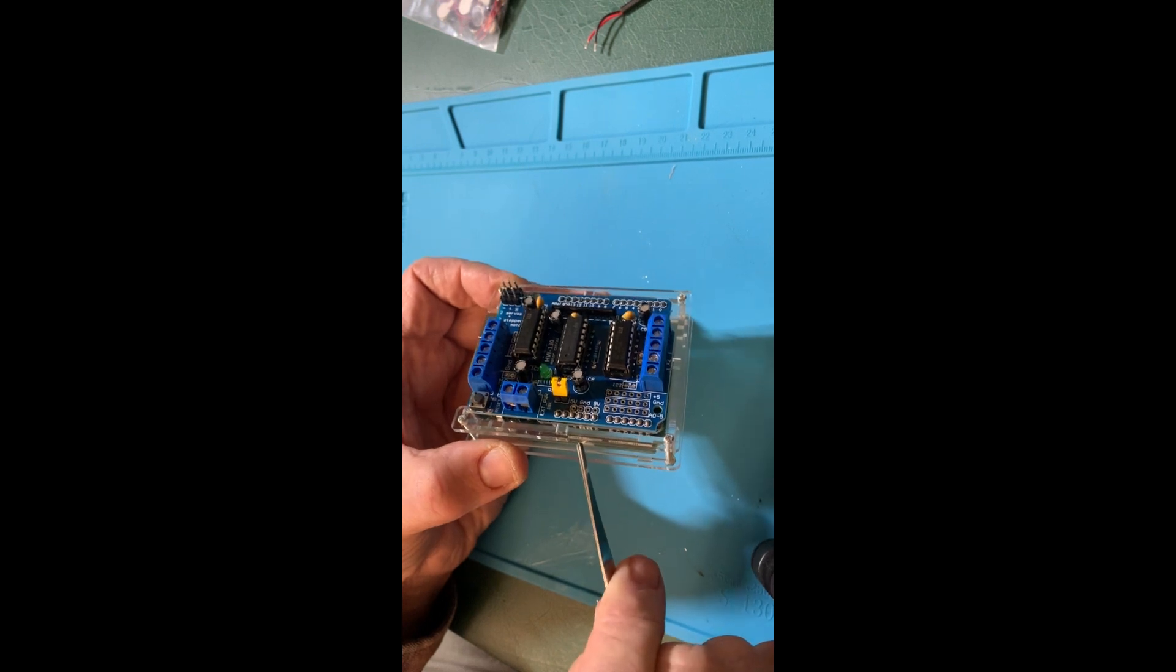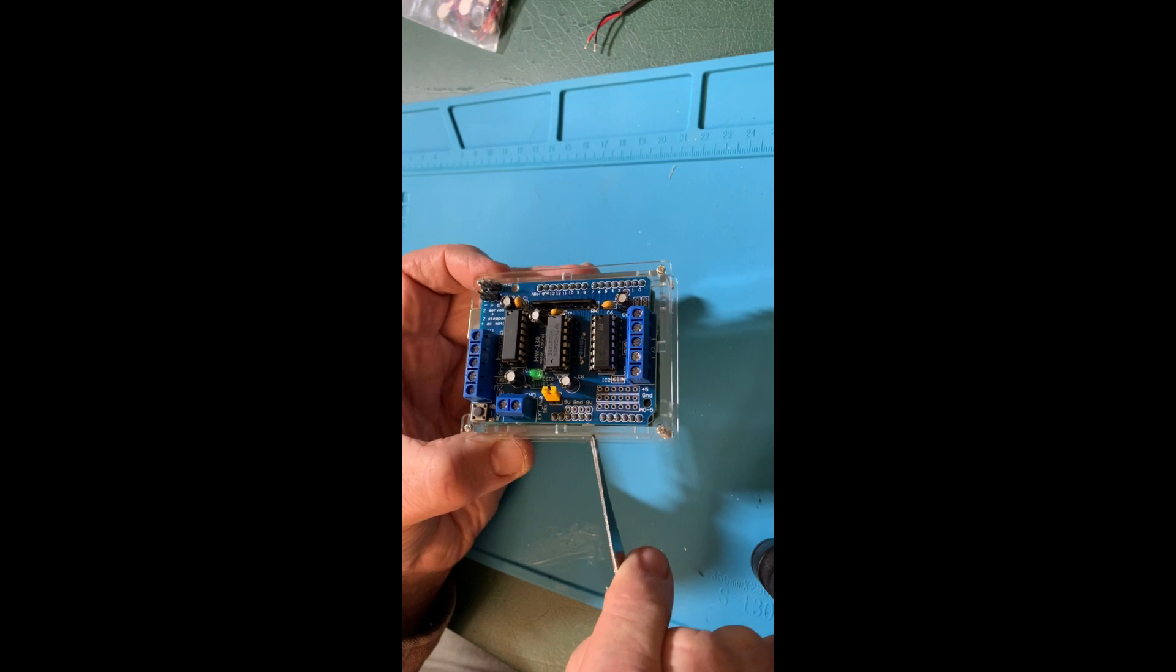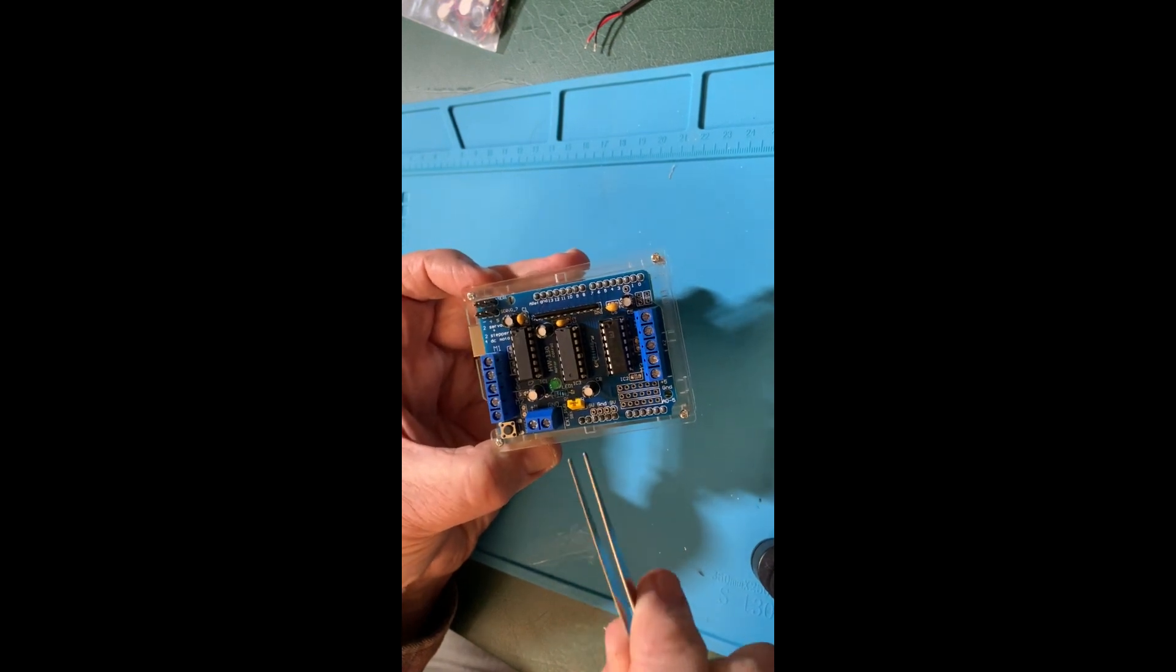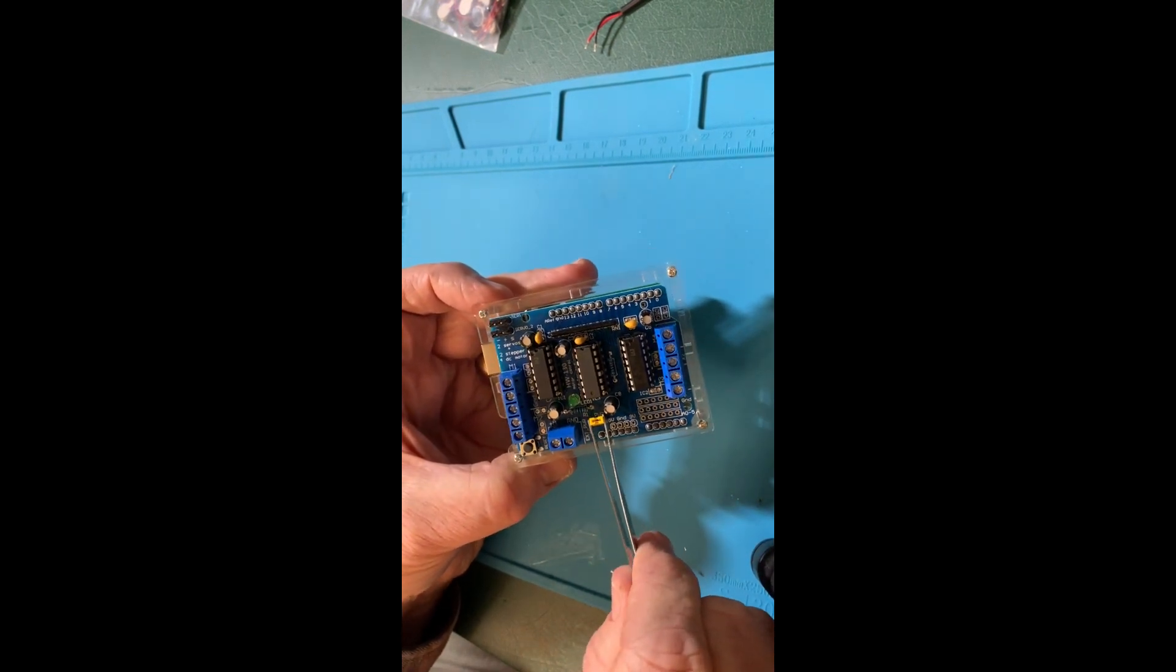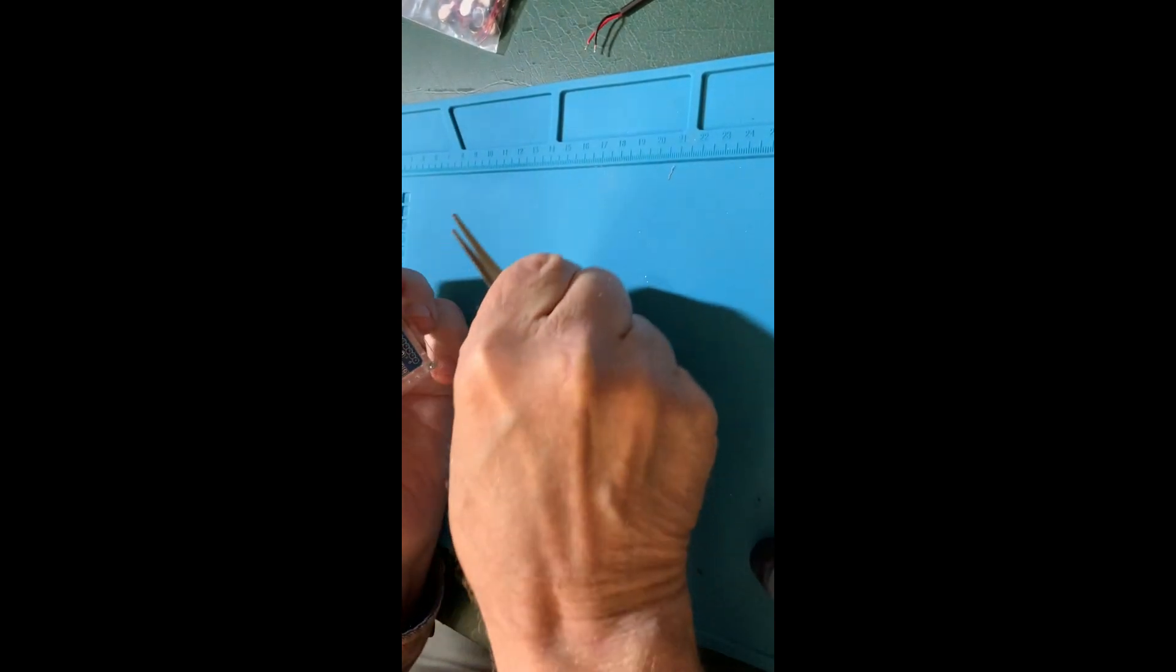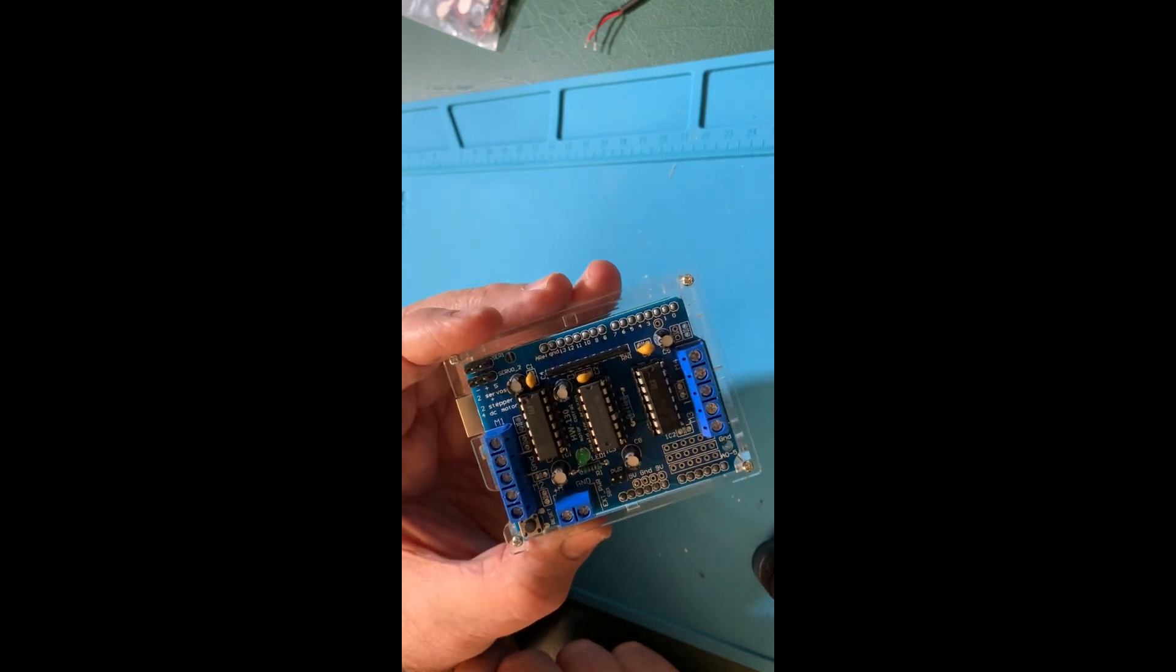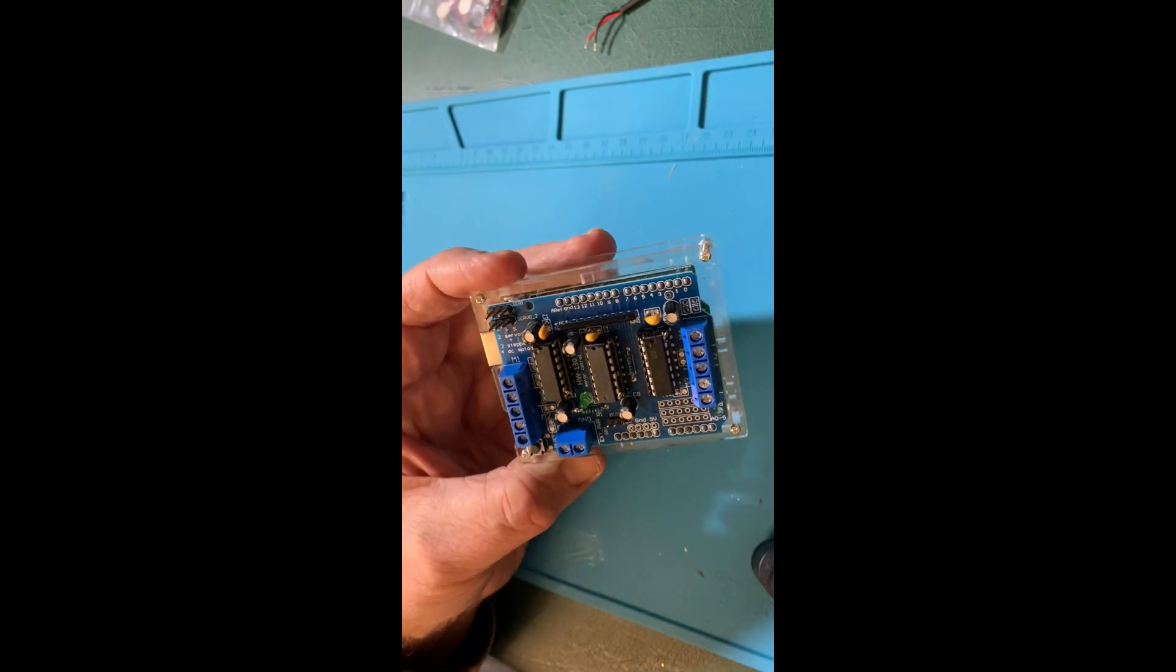Now, the issue with that is that we don't get enough power through the Arduino's power supply to drive the motors at the level we need to. So we are going to take this off. And you will not need that jumper again. So that means that we have to power this device.